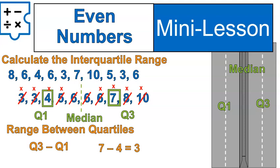Notice, in this case, I skipped the step of actually calculating the median. You don't actually need to calculate the median. I didn't need to do 6 plus 6 divided by 2 because I was just finding quartile 1 and quartile 3. So I just needed to know that that median was located right there.